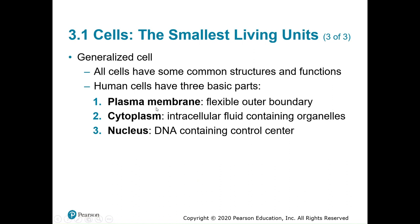Human cells have three basic parts: the plasma membrane, which is the boundary of the cell; the cytoplasm, which holds all the organelles in place; and the nucleus, which is the control center for the cell and contains our genetic code, our DNA.